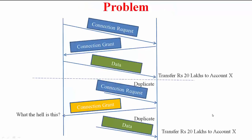Here is the problem. Suppose you establish the TCP connection with your bank. Before the actual data, you send connection request, connection grant, and then as part of this data you are saying transfer 20 lakhs to some account.